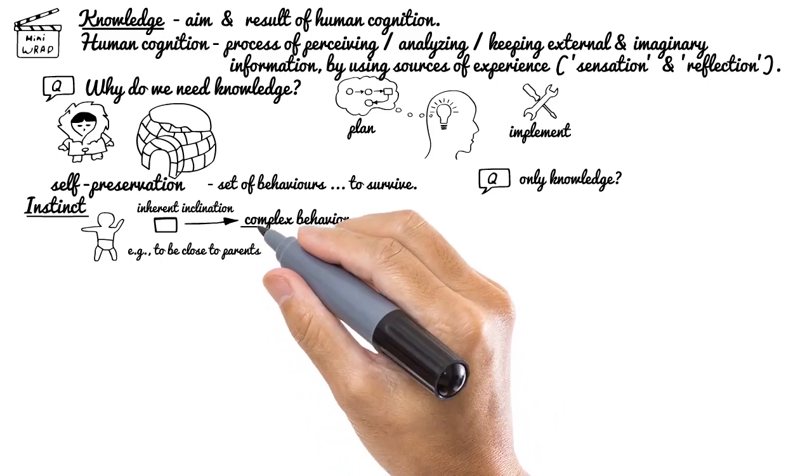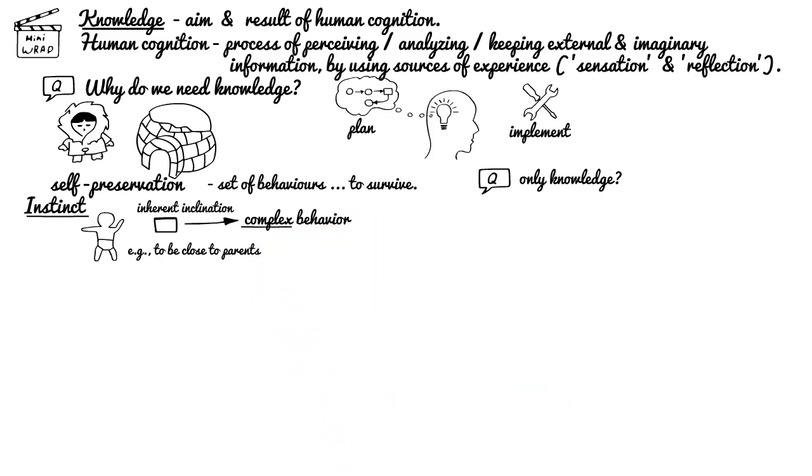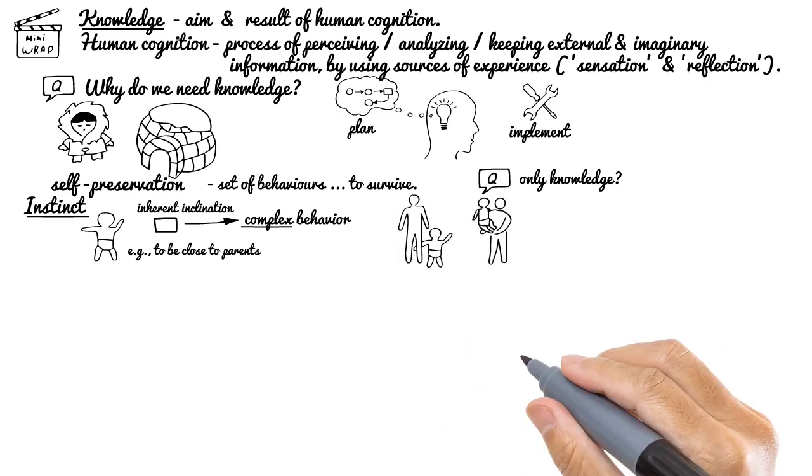Instinct is a complex behavior, not a repetitive single type of action. One time it may be hugging parent's leg, another time it may be asking to take him or her in parent's hands, next time just running towards parent. Different actions, complex behavior, but with the main aim to seek for parents' protection or just to feel safe.